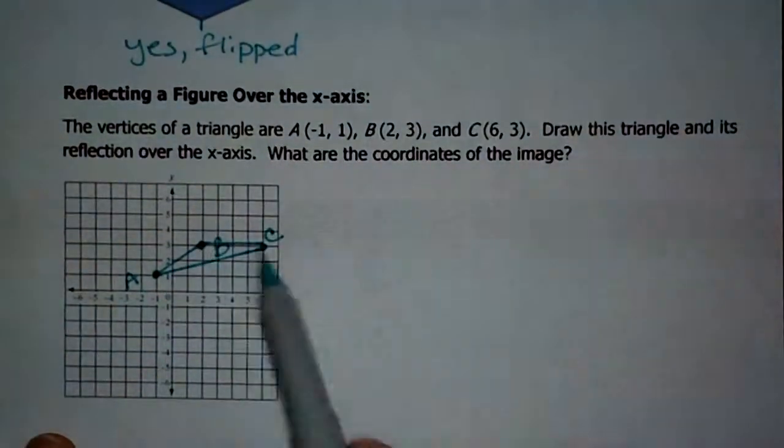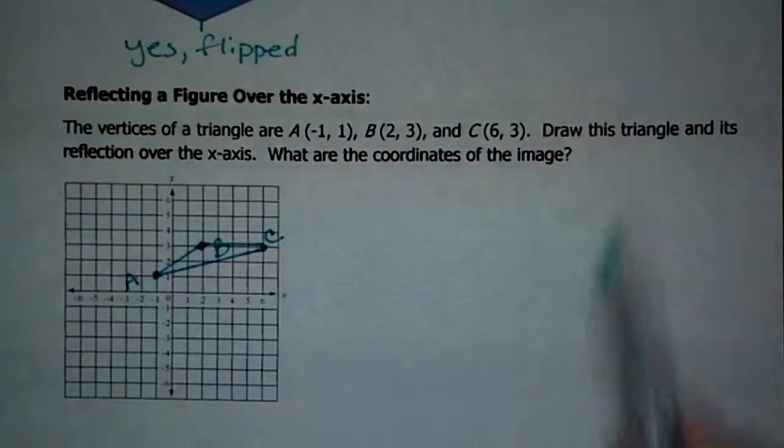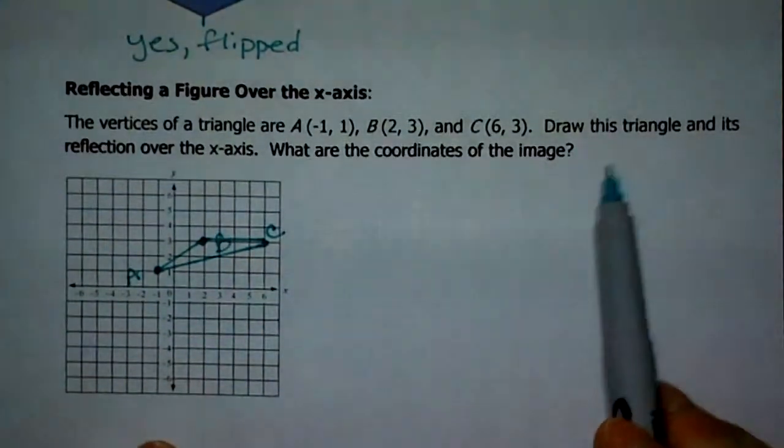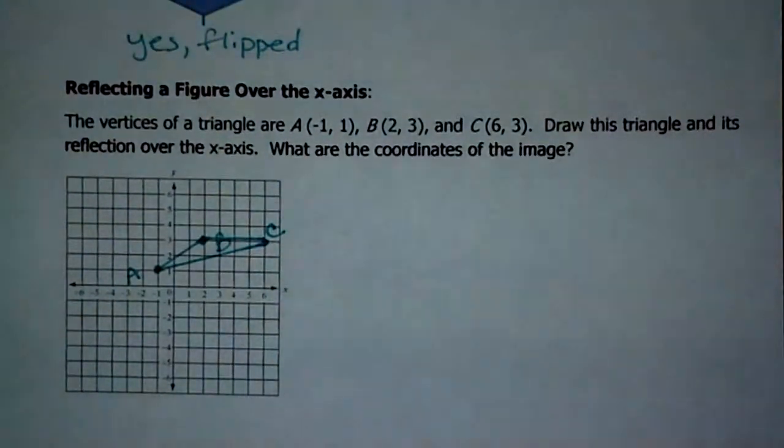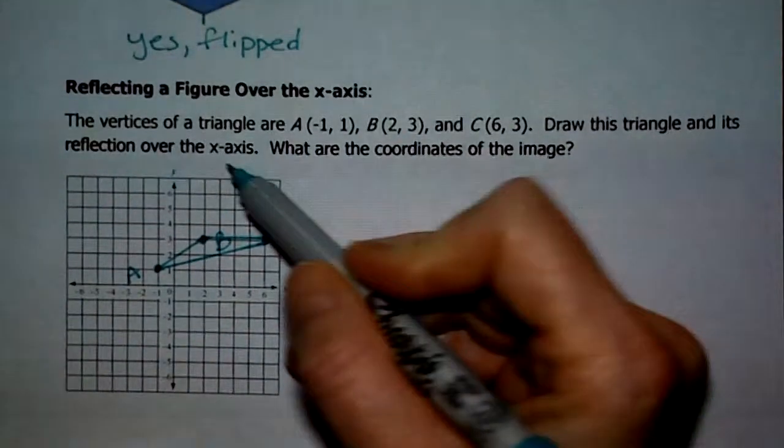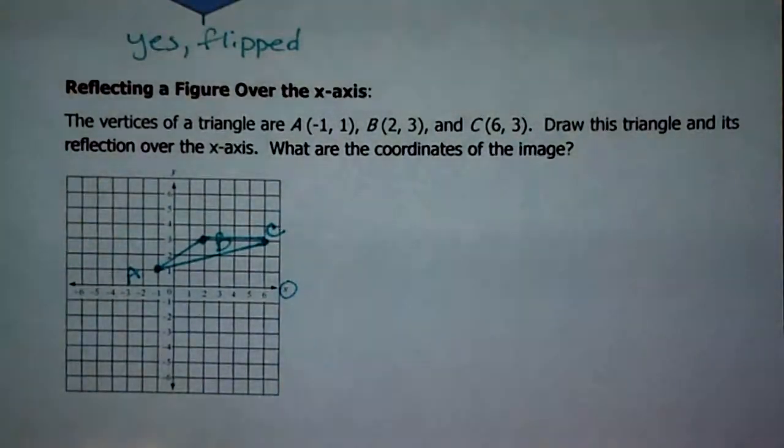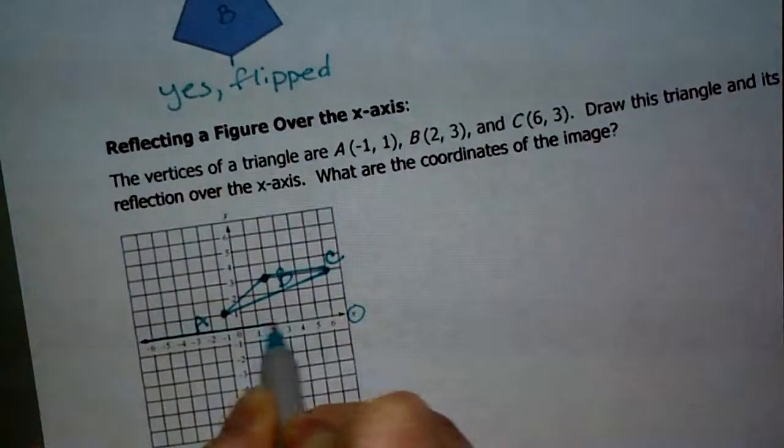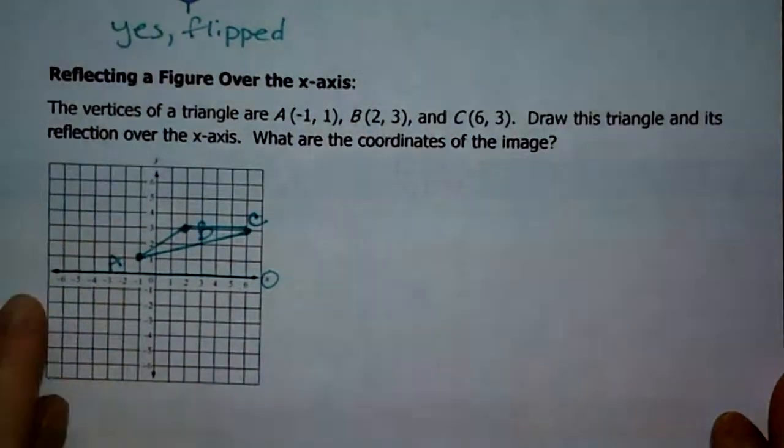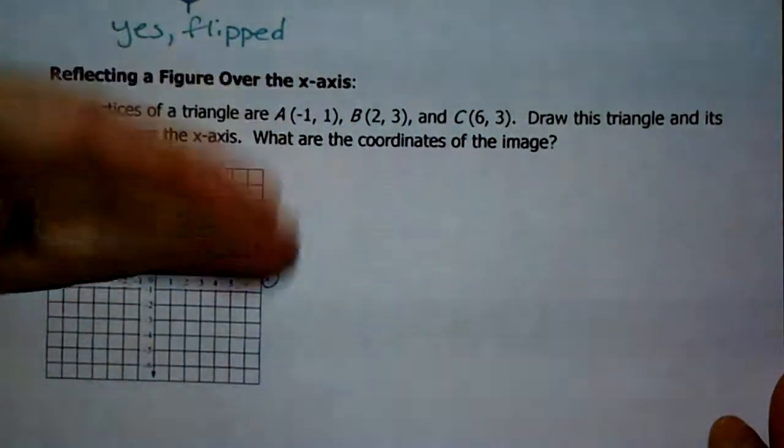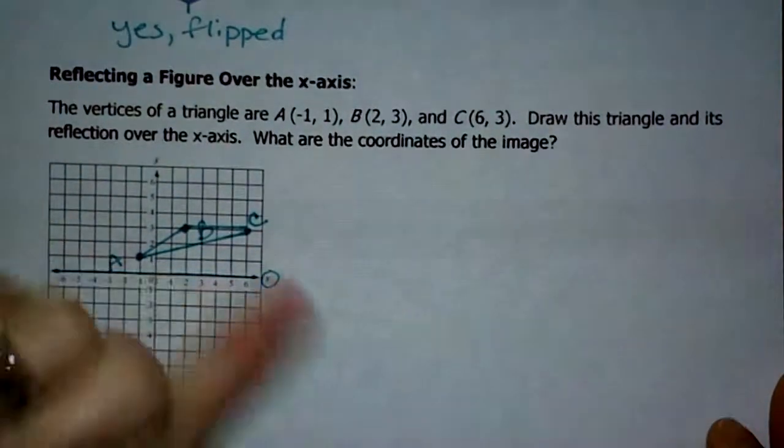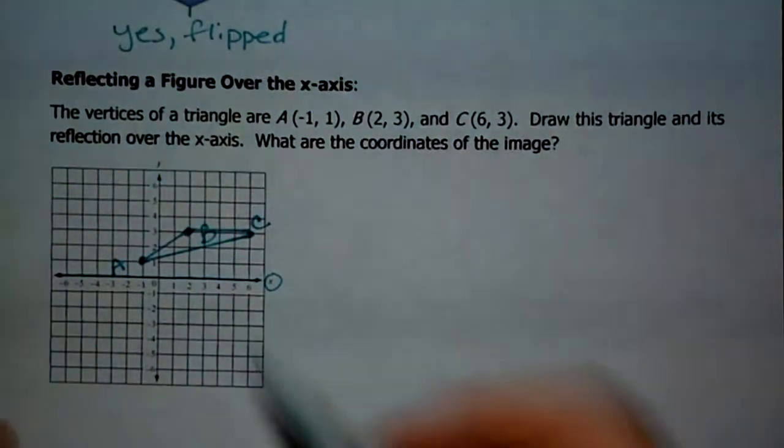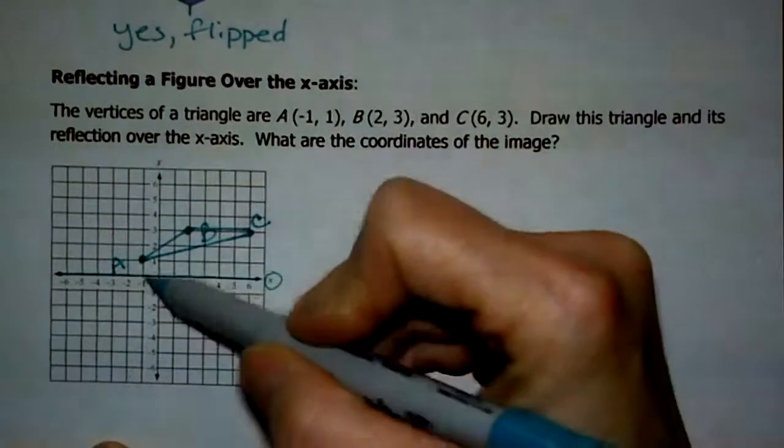The vertices of this triangle ABC all set. Now, we're supposed to draw this triangle and its reflection over the x-axis. So we drew the triangle. Now, we need to draw its reflection, and it says over the x-axis. Here's the x-axis. So that means that this line right here is my line of reflection.